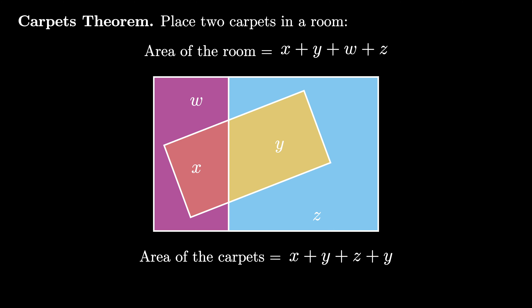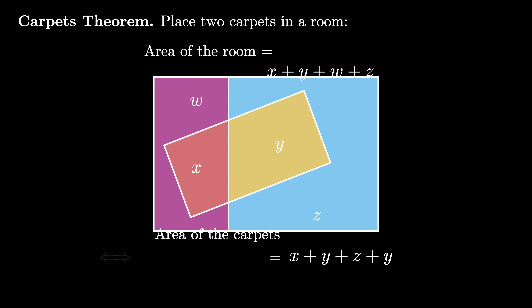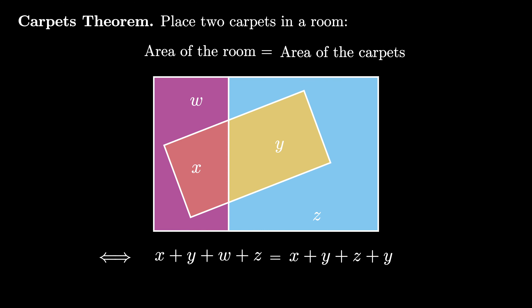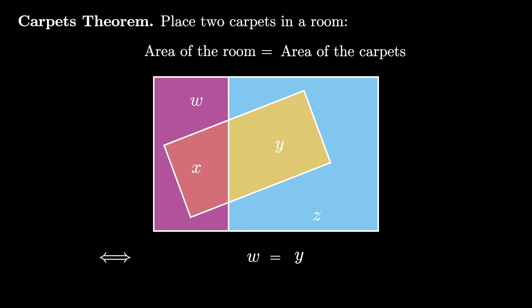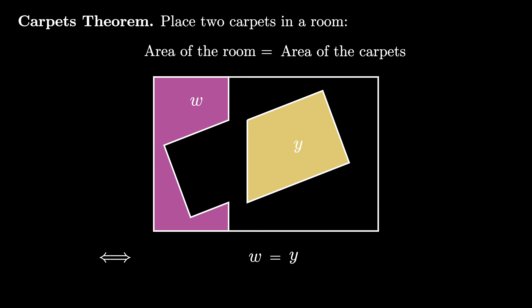Using these two expressions, we see that the area of the room is equal to the area of the carpets if and only if x plus y plus w plus z equals x plus y plus z plus y. We can cancel the x, y, and z from both sides, leaving us with w equals y. This means the area of the room equals the area of the carpets if and only if w equals y — the uncovered area equals the area of the overlap between the two carpets. This is the carpets theorem.